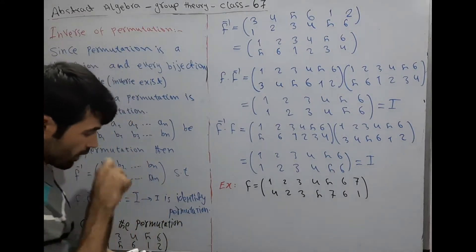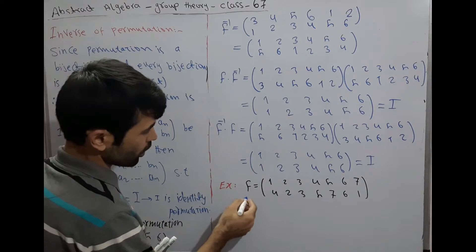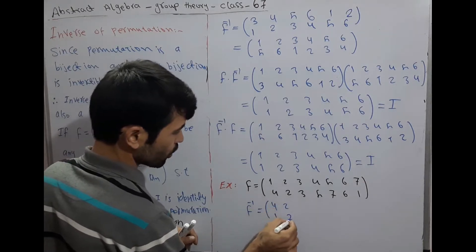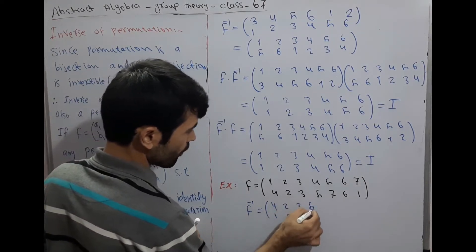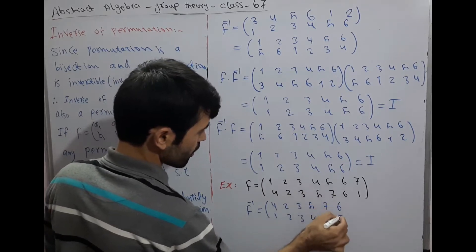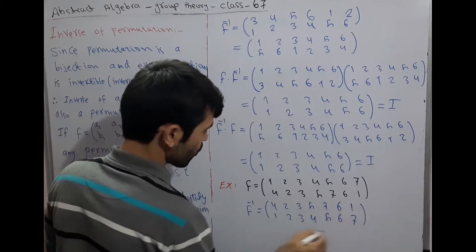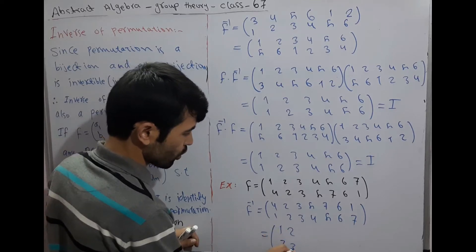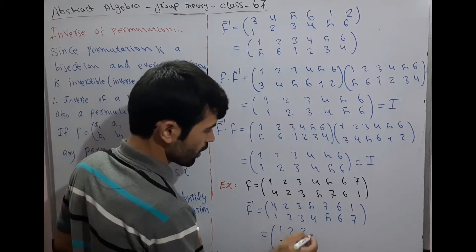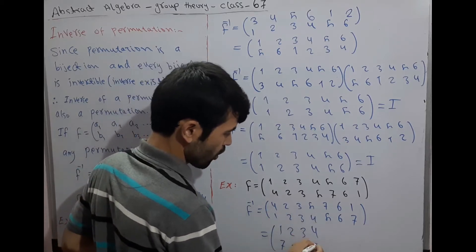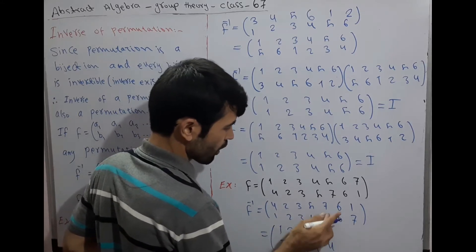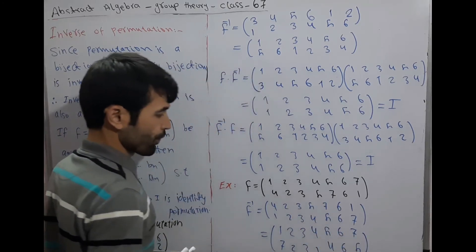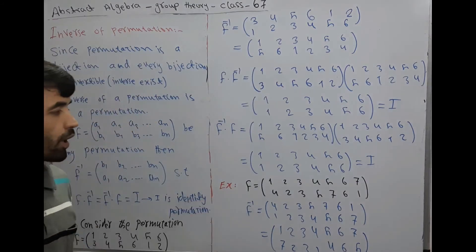Here is another example. We want to find the inverse of a permutation. F⁻¹ = (4 1 / 2 2 / 3 5 / 5 7 / 6 6 / 1 7). Rearranging this permutation, we get F⁻¹ = (1 2 3 4 5 6 7 / 7 2 3 1 4 6 5). This is the inverse of the permutation F. Thank you.